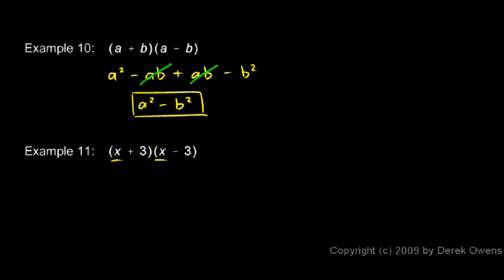The first terms are both x, so x times x is x squared. The outer terms, x and minus 3, give us a minus 3x. And the inner terms, a 3 and an x, give us a plus 3x. And you can see that those are going to cancel out just like they did in the previous example.